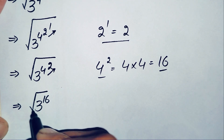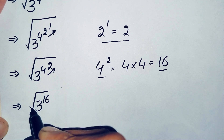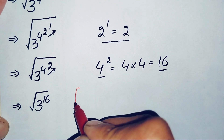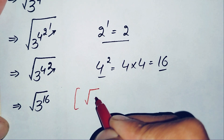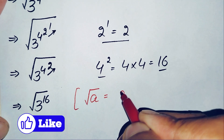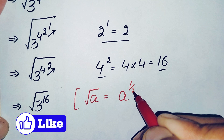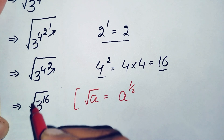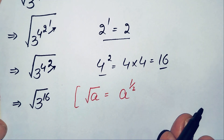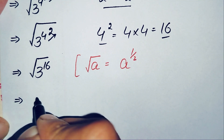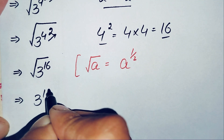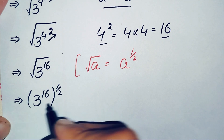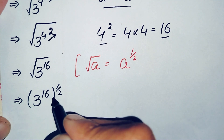Now we will use a result to change this square root to its exponential form. We can write the square root of any number a in exponential form as a raised to power 1 over 2. So we replace the square root with the exponent 1 over 2, giving us: 3 raised to power 16, whole raised to power 1 by 2. Now we have two powers, so we will use an exponential math property and multiply the powers.